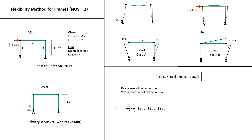Moving on to member 2: we have 1 over EI times the integration factor of 1 for a rectangle times a rectangle, height of the real moment diagram 12 feet, height of the virtual moment diagram 12 feet, length of the member 25 feet. Moving on to member 3 — it's the same as member 1, so I won't go over it in detail.